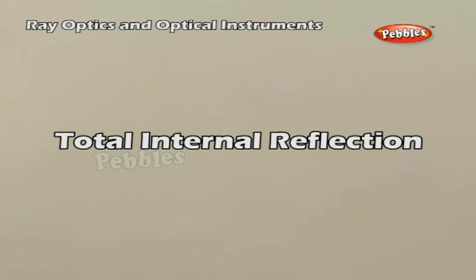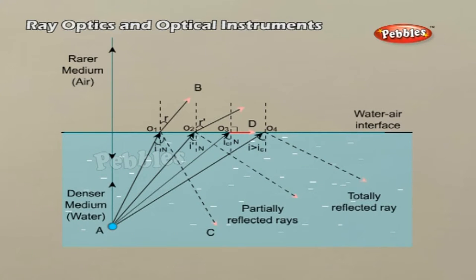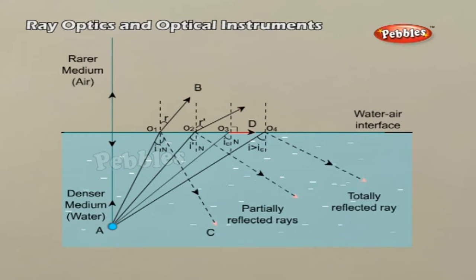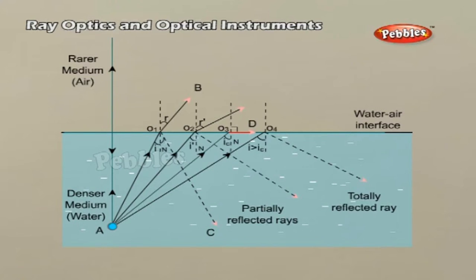Total internal reflection. When a ray of light enters from a denser medium to a rarer medium, it bends away from the normal — for example, the ray AO₁B in the figure. The incident ray AO₁ is partially reflected (O₁C) and partially transmitted or refracted (O₁B). The angle of refraction R is larger than the angle of incidence I. As the angle of incidence increases, so does the angle of refraction.